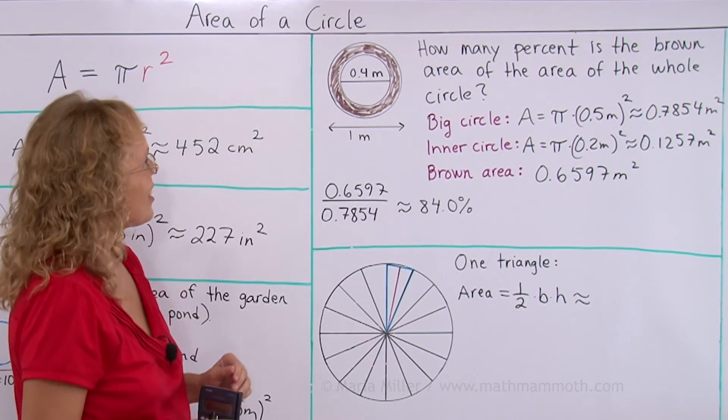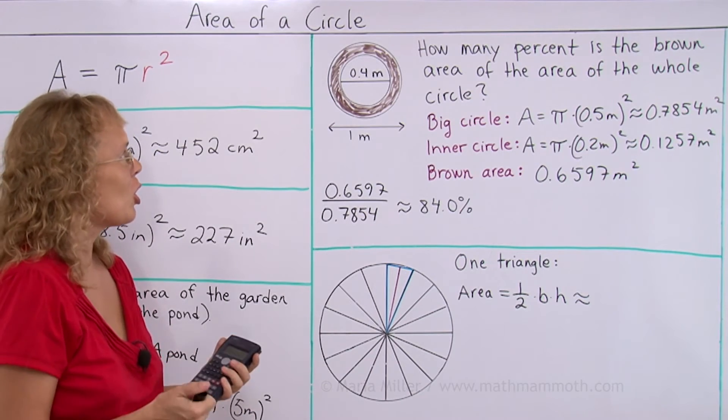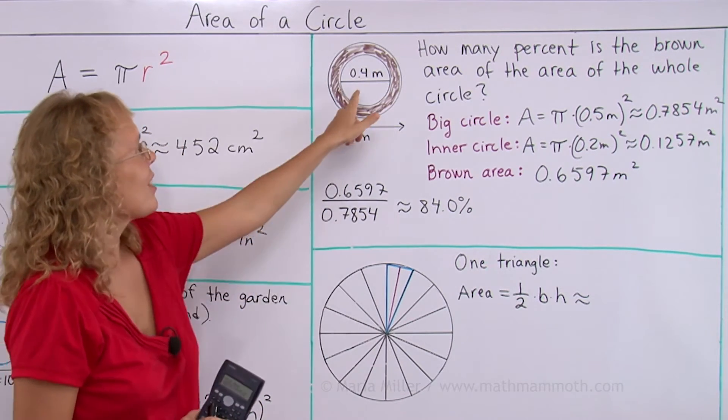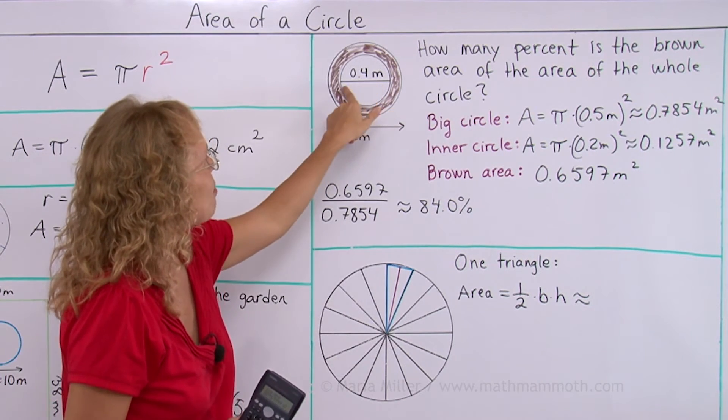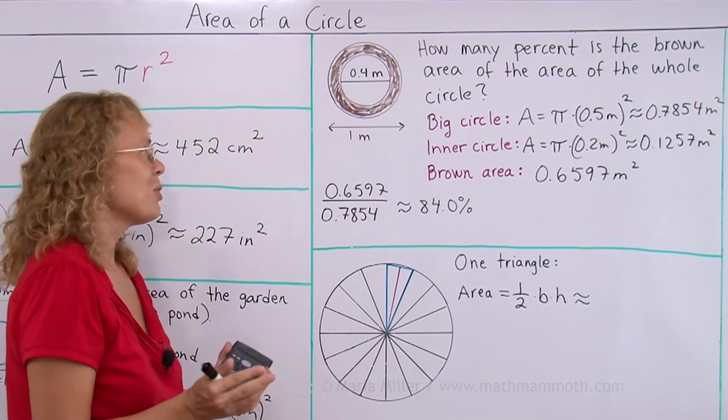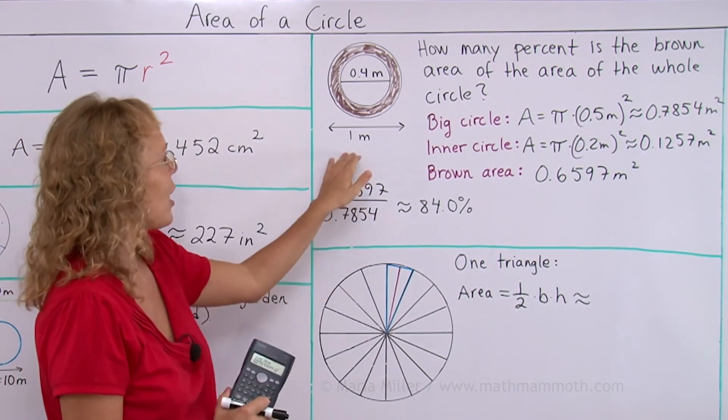And so we will get about 84.0%. And you might say that it doesn't look like it. It looks like this brown area surely isn't almost all of this circle. But the problem is, it is not drawn to scale. This diameter here is more than half of one meter, right? So you have to be careful. The problems in math books might also not be drawn always to scale.